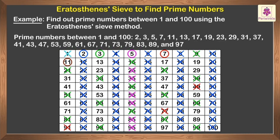Thus, the prime numbers between 1 and 100 are 2, 3, 5, 7, 11, 13, 17, 19, 23, 29, 31, 37, 41, 43, 47, 53, 59, 61, 67, 71, 73, 79, 83, 89, and 97.